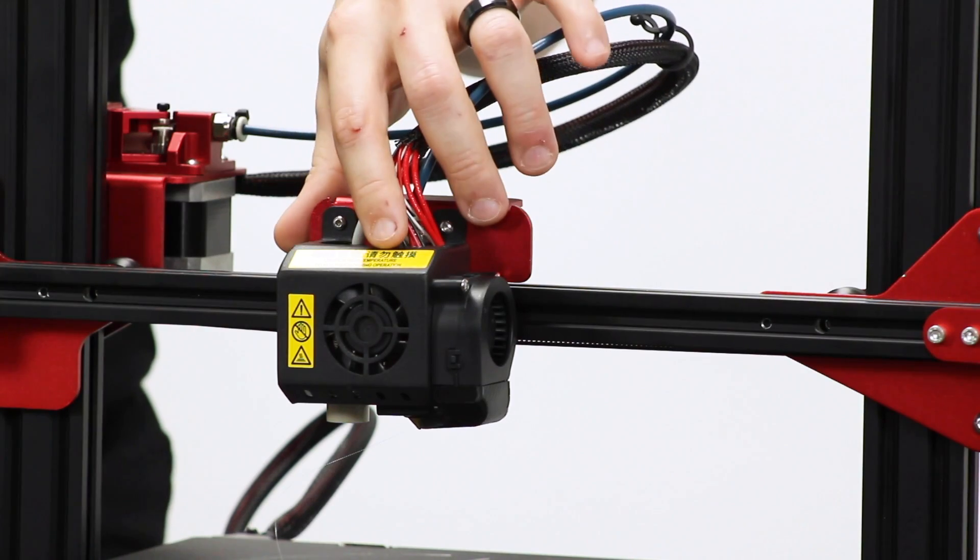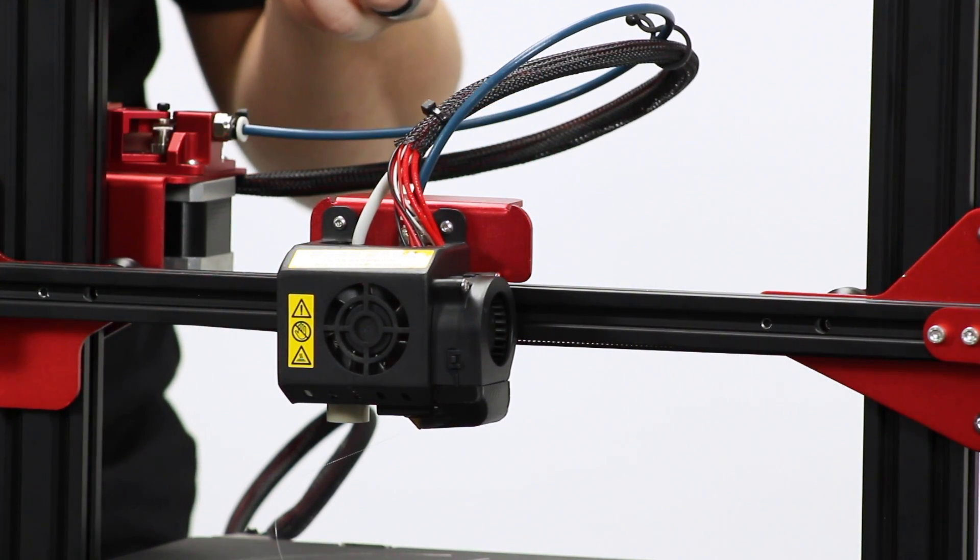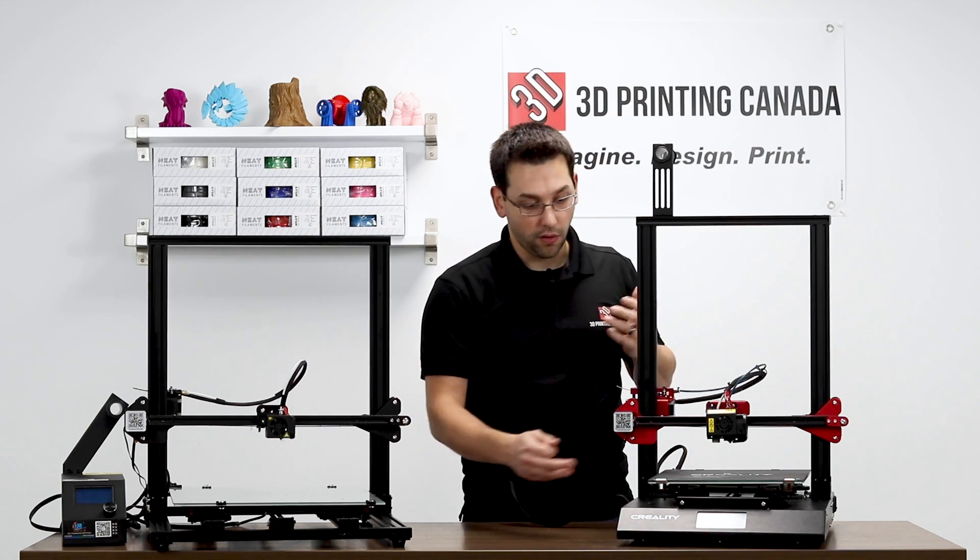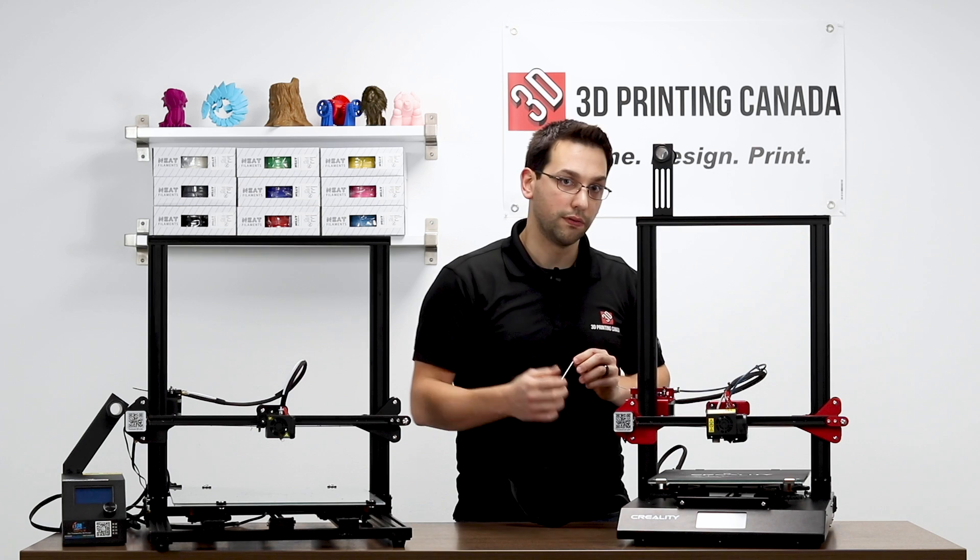And they have auto bed leveling. In this case, they're using a capacitive probe. They're using capacitive because inductive doesn't work at all on glass and works pretty poorly on an aluminum surface.